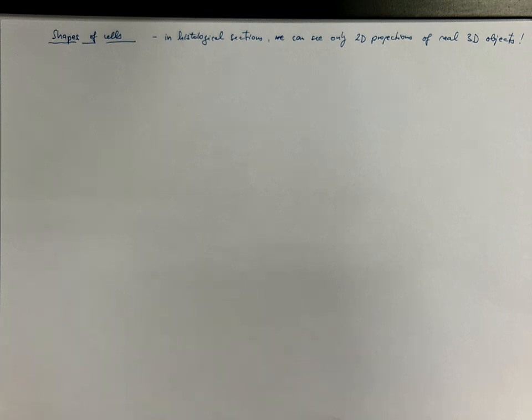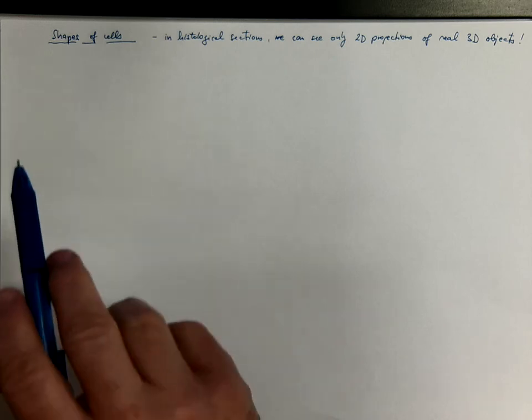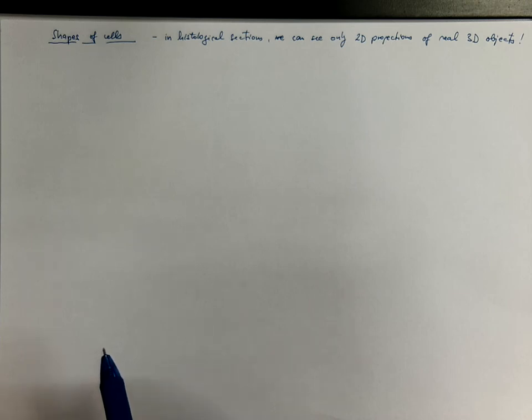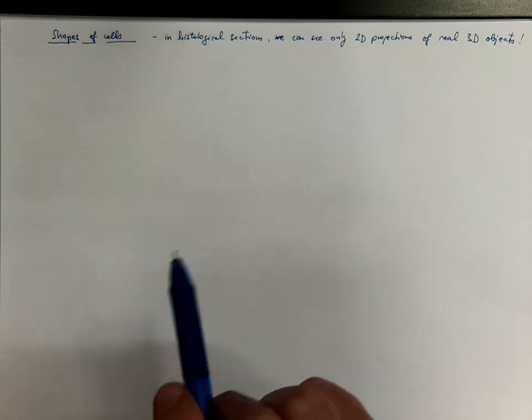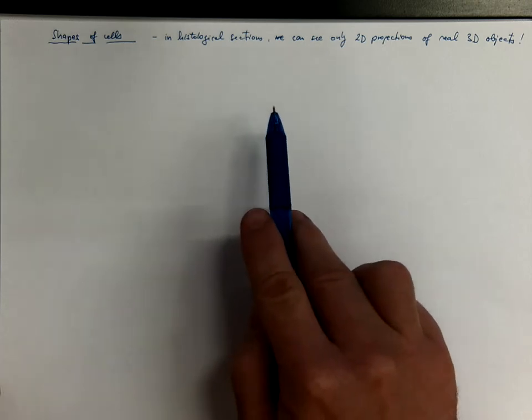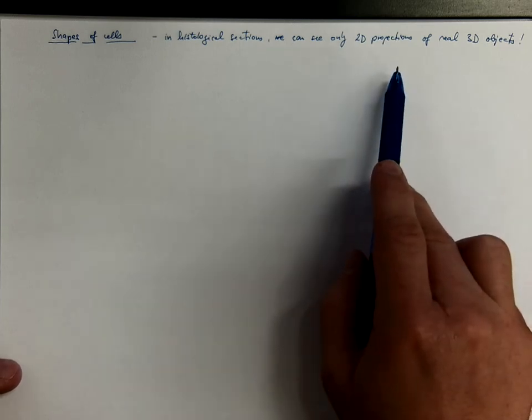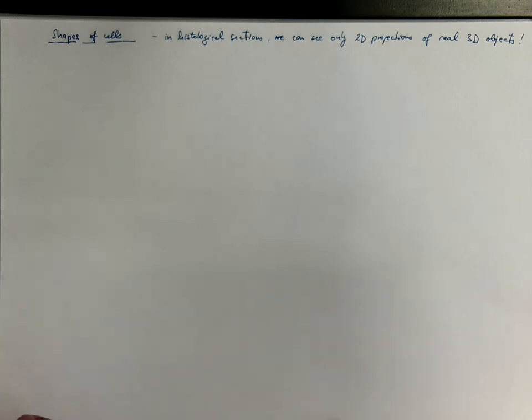Hello everybody. Let us consider various shapes of cells we can see in histological sections. Although we should take in mind that in histological sections we can see only two-dimensional projections of the real three-dimensional objects.